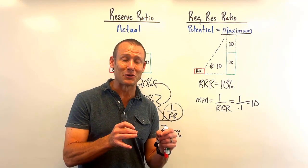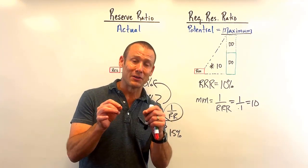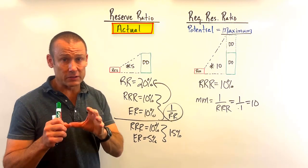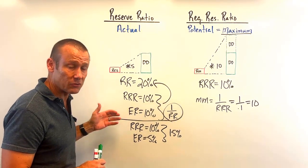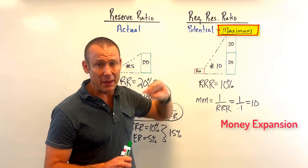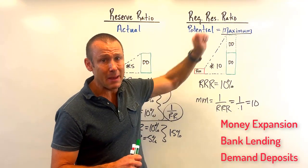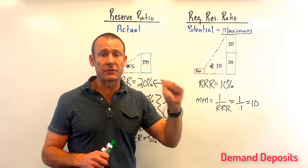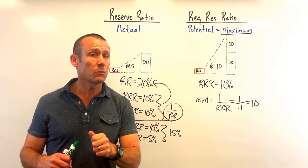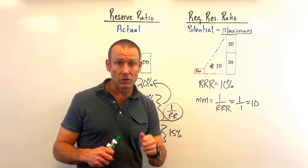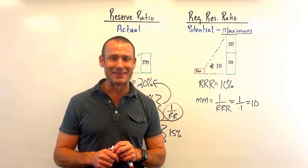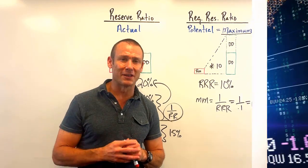To summarize: the reserve ratio is about what's actually happening in banks — it looks at both required reserves and the excess reserves banks choose to hold. The required reserve ratio is about potential money expansion, bank lending expansion, and demand deposit expansion at the maximum, looking only at reserves a bank is required to hold. When you do 1 over the required reserve ratio, you'll almost always get a number bigger than 1 over the reserve ratio, at least if banks are choosing to hold any excess reserves.